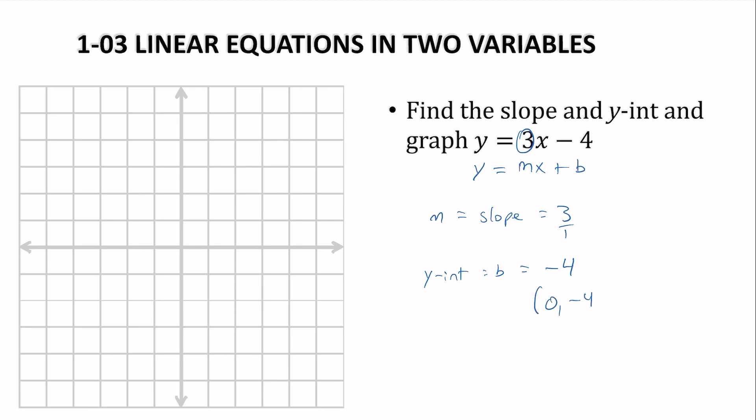Or (0, negative 4). So we start there, and we follow our slope, which is up 3, because slope is rise over run. So we go up 3, over 1. Up 3, over 1. And then we draw the best line that we can through all the points.